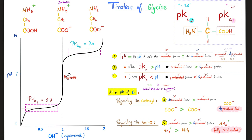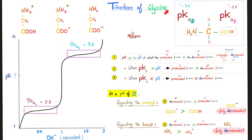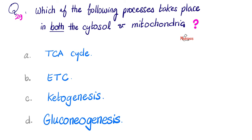The word 'zwitterion' means hybrid, and it's an ion because we have both a positive and negative charge, making the entire molecule neutral. At pH 13, both sides favor the deprotonated forms. If you have any problems with titration of amino acids, please refer to video number 3 in this biochemistry playlist.